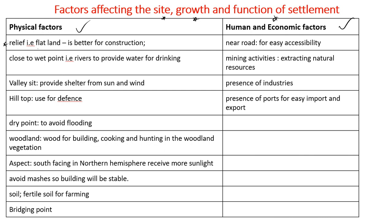Under relief, you check if it's flatland, because flatland is better for construction and also for farming. If it's close to a wet point such as rivers, this provides water for drinking and rivers are also good for fishing. A valley site provides shelter from sun and wind. Being on top of a hill is used for defense, and a dry point is chosen to avoid flooding.